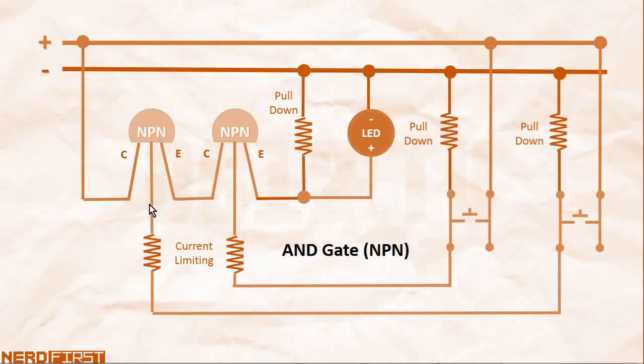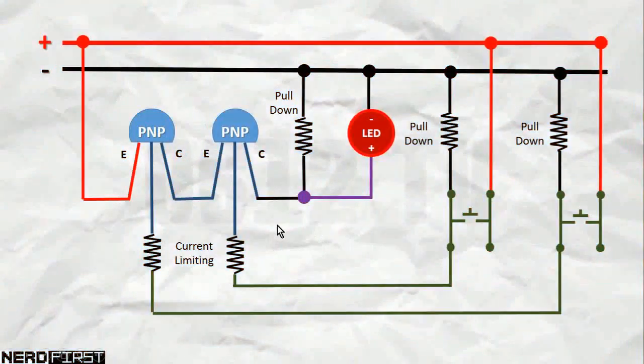The only thing we need to change is to replace the two transistors, like so. When we actually switch them from NPN to PNP, we convert our AND gate to a NOR gate.